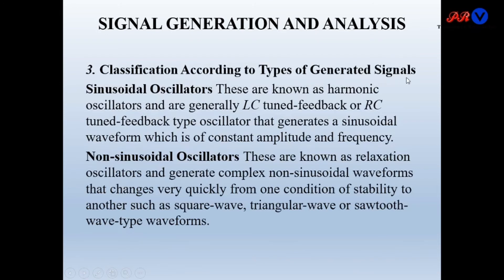Classification according to types of generated signal: sinusoidal oscillators are known as harmonic oscillators and are generally LC-tuned feedback or RC-tuned feedback type oscillators, generating only sinusoidal waveforms of constant amplitude and frequency. Non-sinusoidal oscillators are known as relaxation oscillators and generate complex non-sinusoidal waveforms such as square wave, triangular wave, or sawtooth wave.